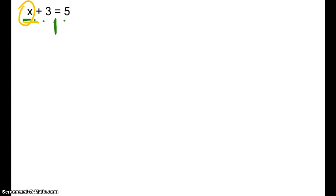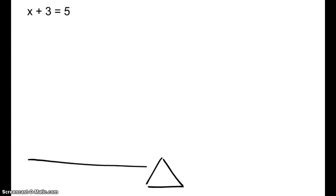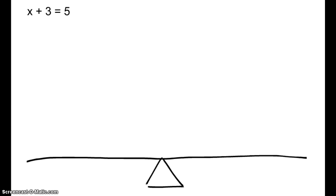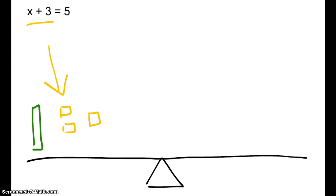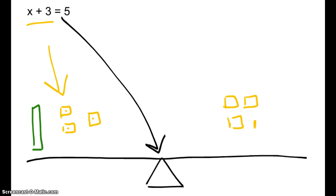Remember, equals does not mean answer. What this really means is something and 3 positives has the same weight as 5 positives. So here's how we're going to set this up — I'm going to draw a balance. Using our algebra tiles, the greens represent an x and the yellow squares are our positives. On the left side of the equal sign, we have an x and 3 positives. This balance triangle really is the equal sign. On the right side, we have 5 positives.